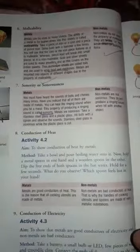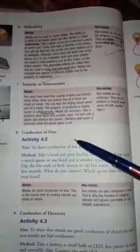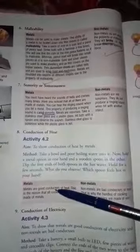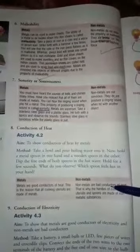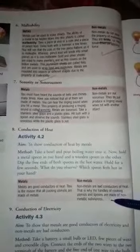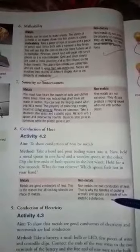What we observe is that the metal spoon becomes hot because metals are good conductors. That's why cooking utensils are made of metals. But non-metals are bad conductors, so handles of cooking utensils are made of non-metallic substances.